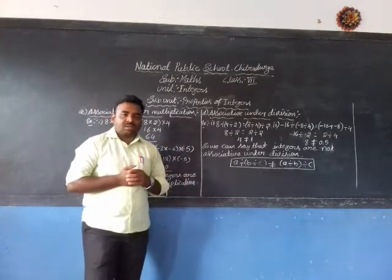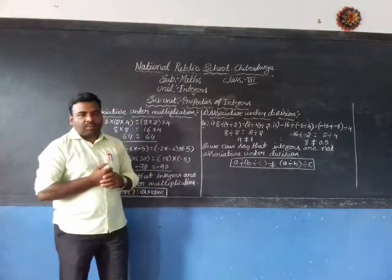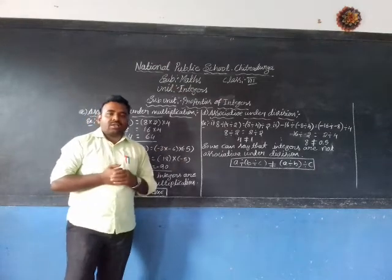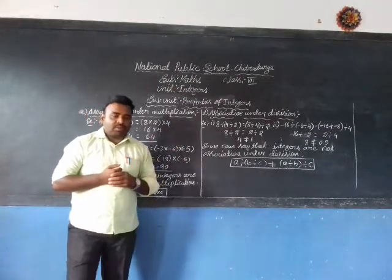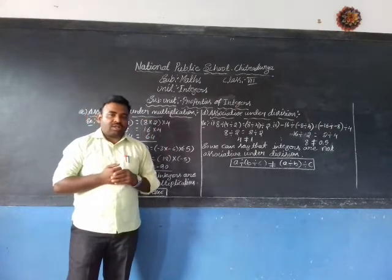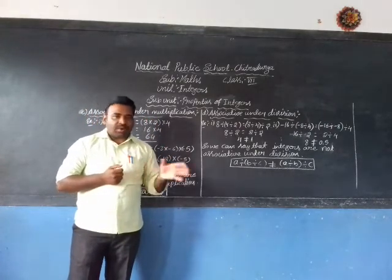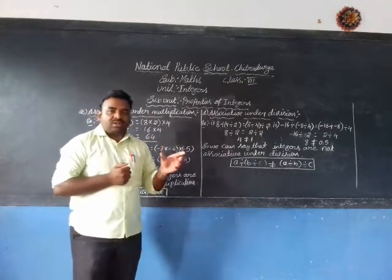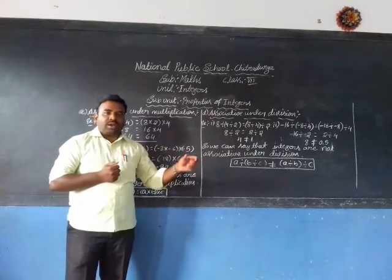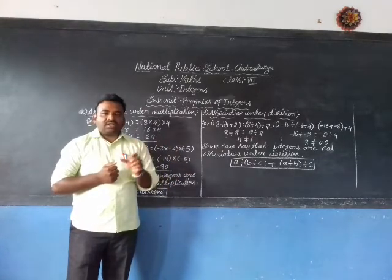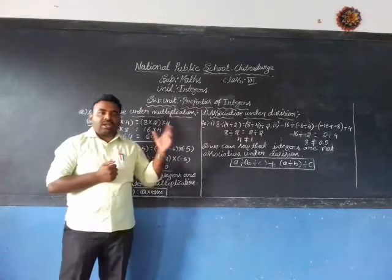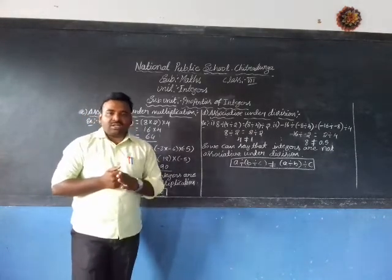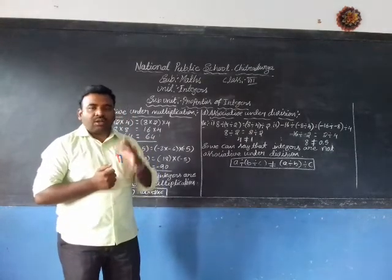Dear students, in the previous class we discussed the same topic — associative property. We covered what associative property is, associative property in addition, and associative property in subtraction. Associative property means changing the grouping of the operands does not change the result. In addition, integers are associative, but in subtraction, integers are not associative.